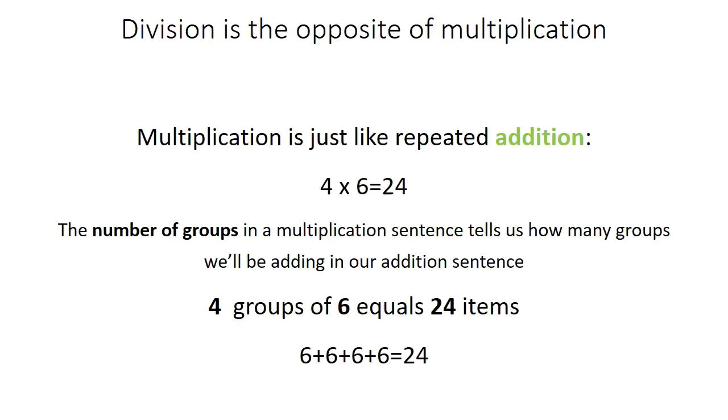Let's look at this in action. In this multiplication sentence, we see that 4 times 6 is 24. 4 groups of 6 makes 24 items.